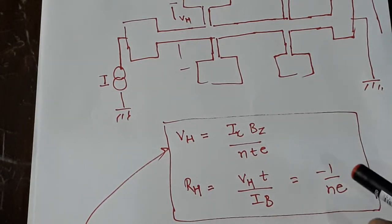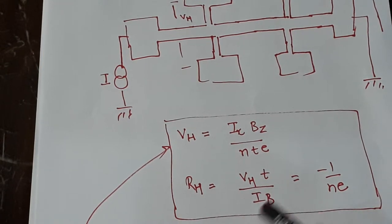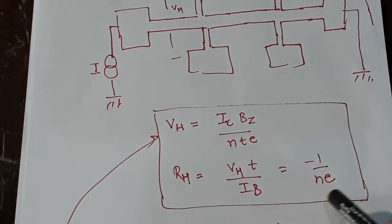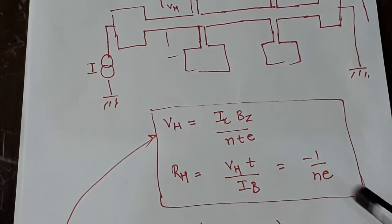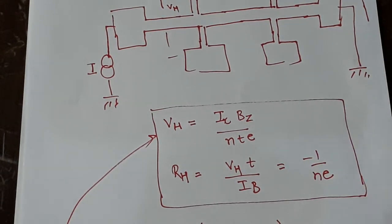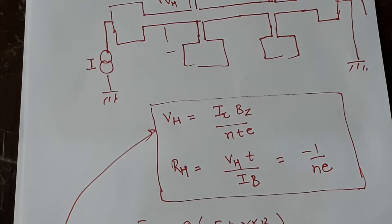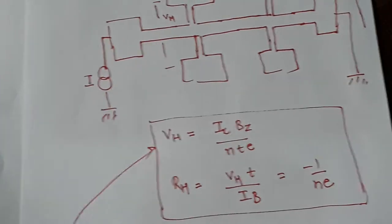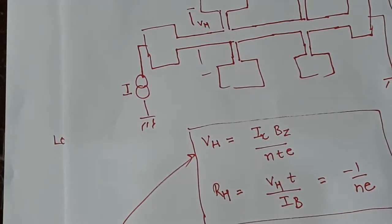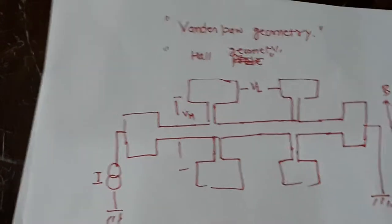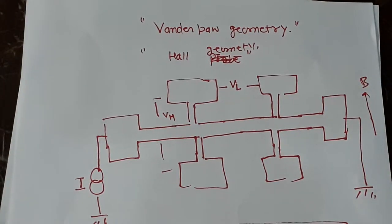V Hall equals IB by nte, where n is the number density, t is thickness, e is the electron charge like 1.6 times 10^-19. With Rh, which is called Hall coefficient, you can get your number density. You can also get mobility if you have longitudinal resistance.